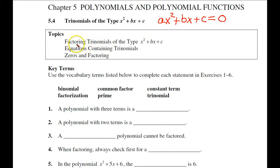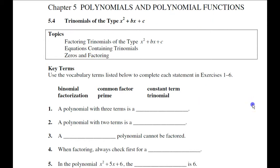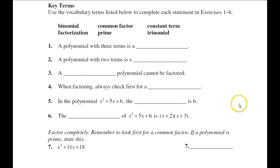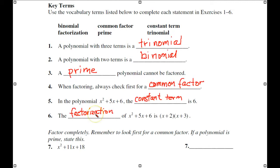In this section we're going to be dealing with factoring trinomials, and then equations containing trinomials. Going back to what we had in the previous lesson — zeros and factoring. We're going to start off with doing the matching and follow our usual procedure. You can pause, and then I'll go over these with you. This will be a good review of what we've been doing.